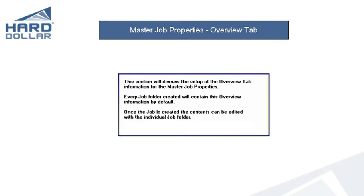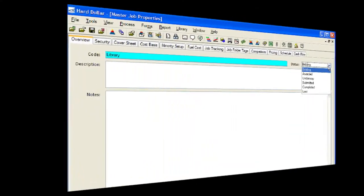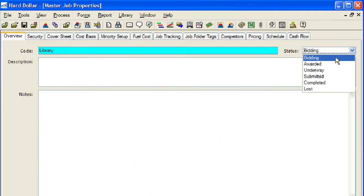This section will discuss the setup of the Overview tab information for the Master Job Properties. Every job created will contain this overview information by default. Once a new job is created, the contents can be edited within the individual job folder. The Overview tab provides you with the ability to enter a default status for all new jobs as they are created.